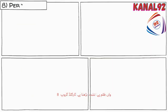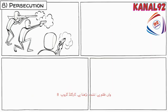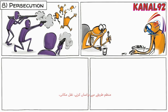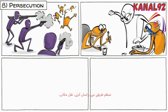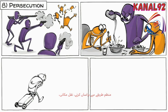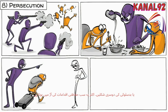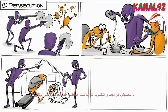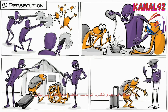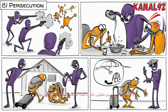Eighth is persecution. Violence escalates. The targeted group is systematically subjected to harassment, displacement, or other forms of abuse. Often all of that happens under the disguise of security measures.